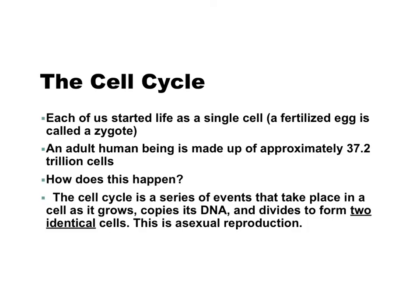When we're talking about the process of our cells dividing, we're talking about the cell cycle. Each of us started life as a single cell. A fertilized egg is called a zygote, and an adult human being is made up of approximately 37.2 trillion cells. So you start off life as one single cell, and by the time you reach adulthood, you're up to 37.2 trillion cells. This happens throughout the cell cycle, which is a series of events that take place in a cell as it grows, copies its DNA, and divides to form two identical cells. This process is also called asexual reproduction.